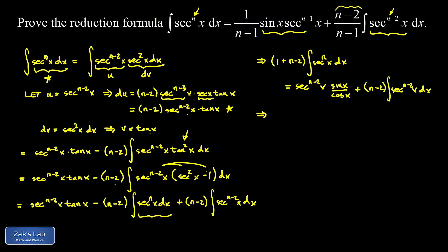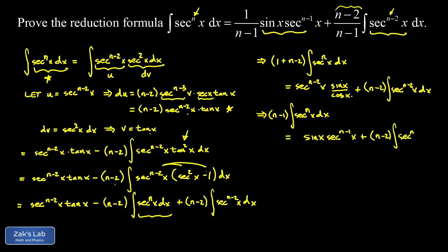Simplifying the left-hand side: one plus n minus two equals n minus one, so we have n minus one times our original integral. On the right-hand side, one over cosine is secant, so secant times secant to the n minus two gives secant to the n minus one times sine x. Writing sine x out in front, we get sine x times secant to the n minus one of x plus n minus two times the integral of secant to the n minus two of x dx. Now we just divide both sides by n minus one.